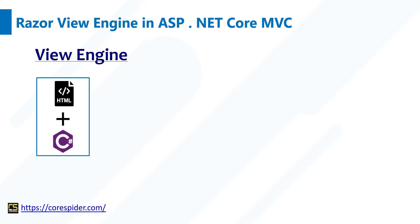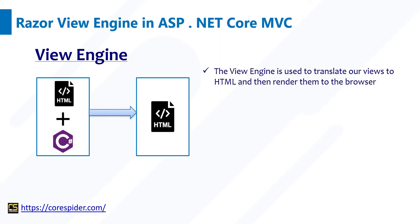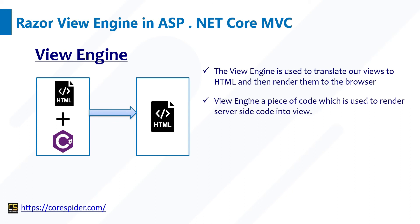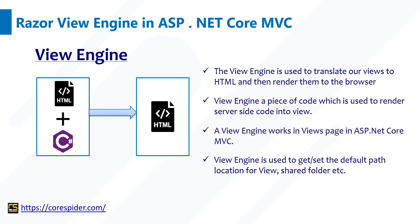Let's first understand what is View Engine. A View Engine is used to translate our View to HTML and then render it to the server. As you can see in the diagram, in the View page you can write HTML code as well as C# code, and then it converts into HTML code. A View Engine is a piece of code which is used to render server-side code into a View. View Engine works on a View page in ASP.NET Core MVC. View Engine is used to get or set the default path of the location per view, shared folder, etc.